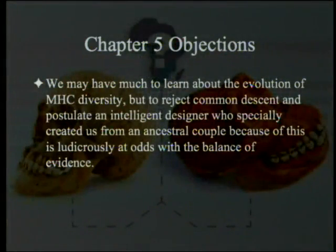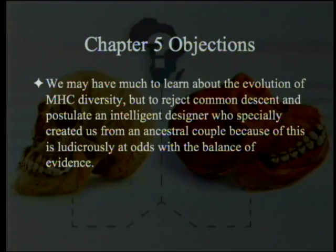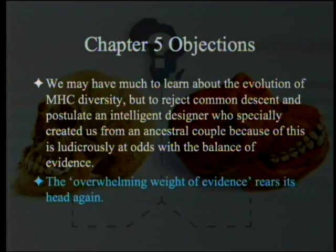Getting back to McBride: we may have much to learn about the evolution of MHC diversity, but to reject common descent and postulate an intelligent designer who specially created us from an ancestral couple because of this is ludicrously at odds with the balance of evidence. And now you see this famous overwhelming evidence argument. What happens is you take each piece of evidence, ignore the negative evidence, accentuate the positive, and when you get done it's not surprising that the weight of evidence is positive. It's a good way of persuading yourself that your opponent has no arguments — take them apart one by one, keep all your arguments even if they're kind of shaky, then argue that you've got the weight of evidence on your side.